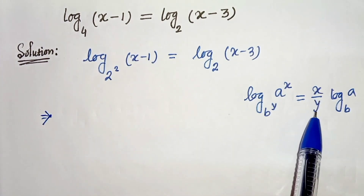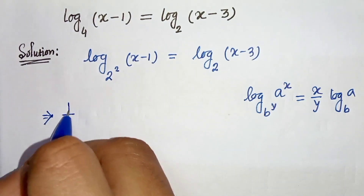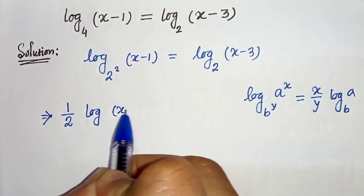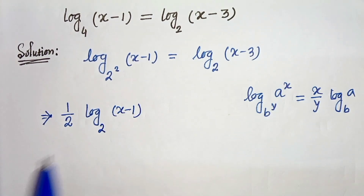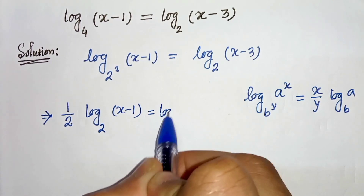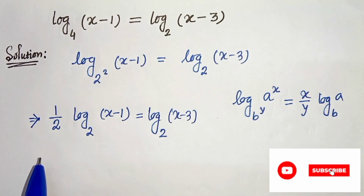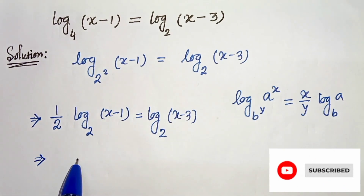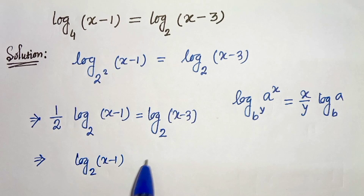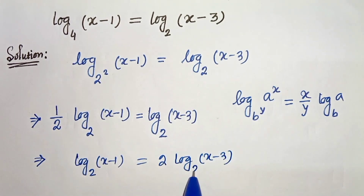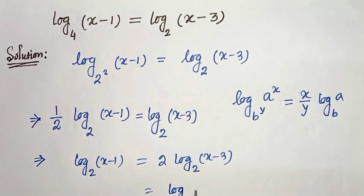Applying this formula, we get one-half times log of (x minus 1) base 2 equals log of (x minus 3) base 2. In the next step, let's multiply both sides by 2, so we get log of (x minus 1) base 2 equals 2 times log of (x minus 3) base 2. Now the 2 goes to the power, giving us log of (x minus 3) squared base 2.